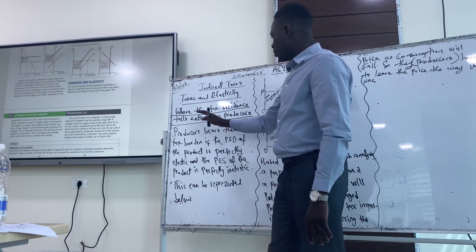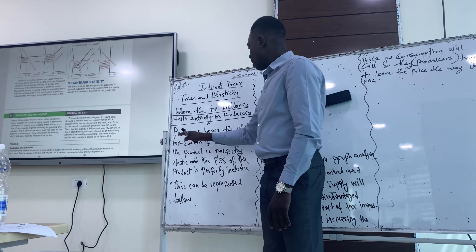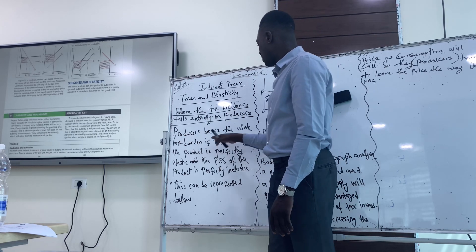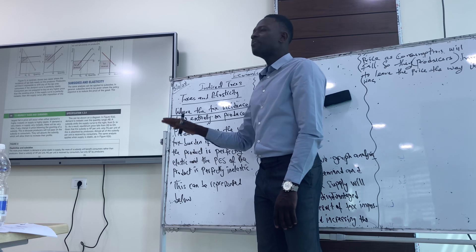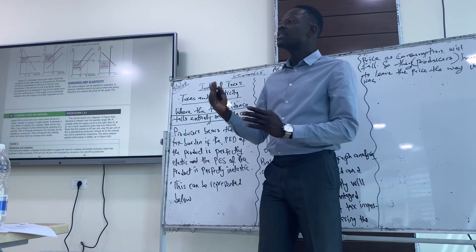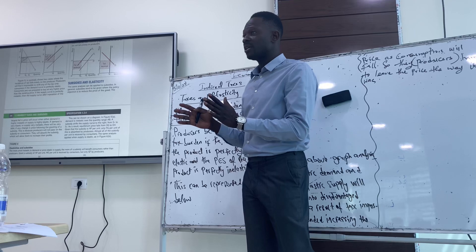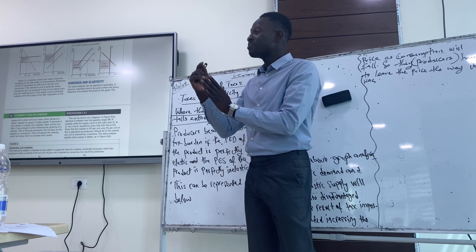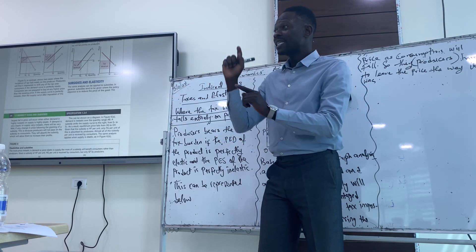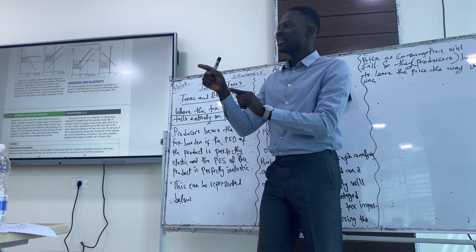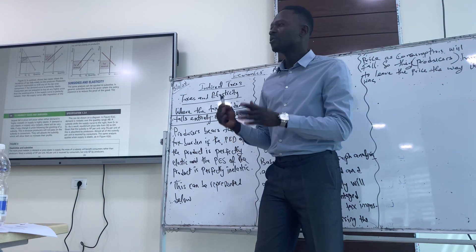For producers, where does the tax burden fall entirely on producers? First, producers bear the whole tax burden if the PED of the product is perfectly elastic. When I say perfectly elastic, it means there's a significant change in the quantity demanded as a result of a change in price — meaning as soon as the price increases, consumers will stop buying. So the tax burden would not go to consumers because consumers would not pay for such products.